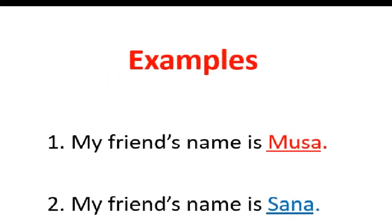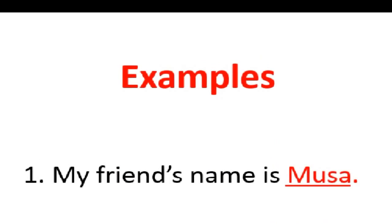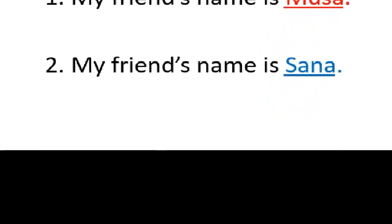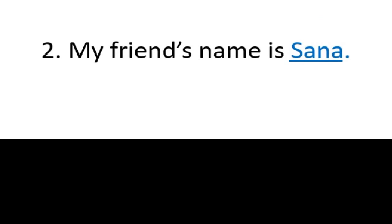Let's look at some examples. Example number one: my friend's name is Musa. Can you judge from the name whether the friend is a boy or a girl? Yes, you can judge that Musa is a boy, so the friend is male. Now look at example number two: my friend's name is Sana. Can you judge whether Sana is a boy or a girl? Yes, we can judge that Sana is a girl, so the friend is female.